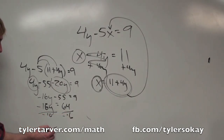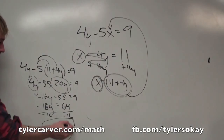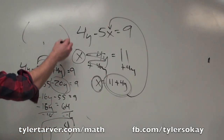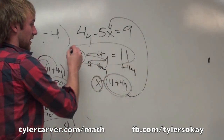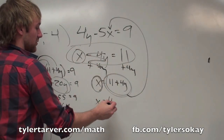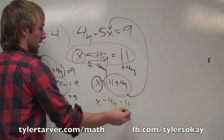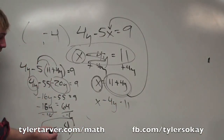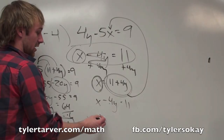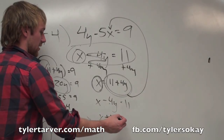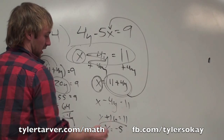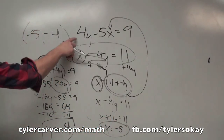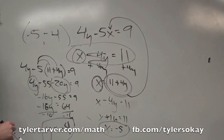Divide by negative 16, so y equals negative 4. We found our y — it's negative 4. To find x, plug that negative 4 into the equation x minus 4y equals 11. Negative 4 times negative 4 is positive 16. Subtract 16, and x equals negative 5. So the coordinate where these two lines cross is at (negative 5, negative 4).